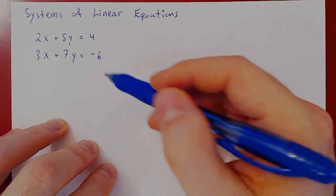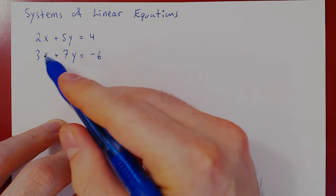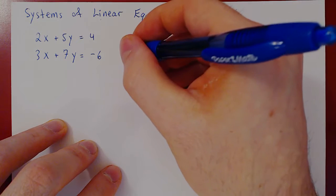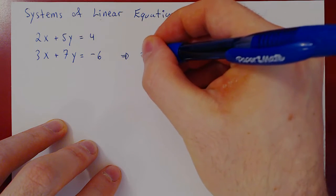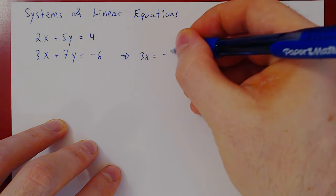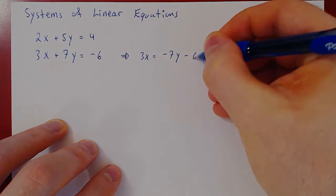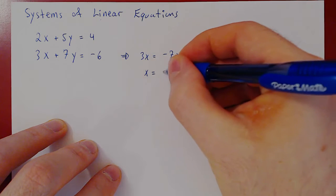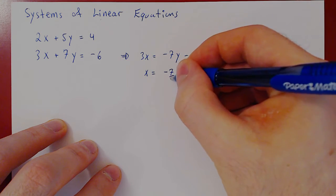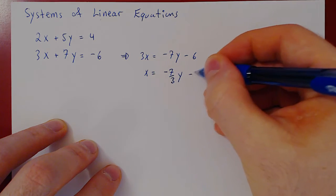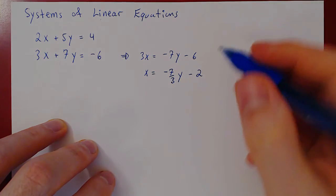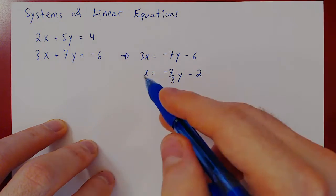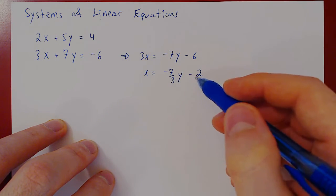Let's see how we could do this. Let's try to isolate x as a function of y from the second equation. This will give us that 3x is negative 7y minus 6. Dividing by 3 on both sides, x will be negative 7 over 3 y minus 2.